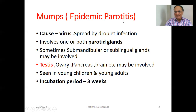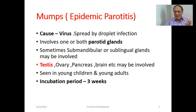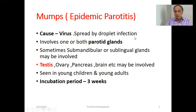Parotitis means inflammation of the parotid gland. Whenever there is a suffix '-itis', it indicates inflammation — for example, tonsillitis, pharyngitis, laryngitis, bronchitis, pneumonitis, appendicitis, salpingitis. The cause of mumps is a virus spread by droplet infection, so be careful about sneezing and coughing, as spread is through the air.